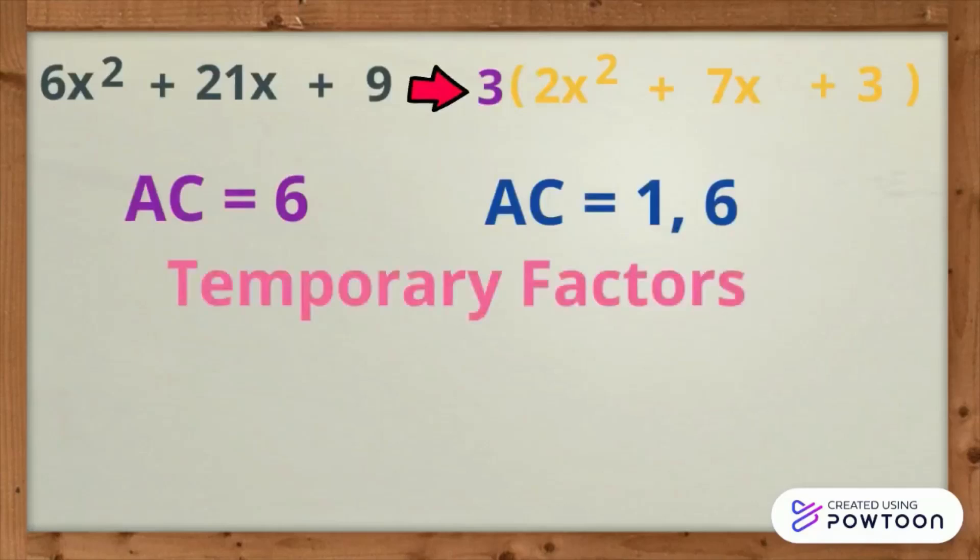Then, we are to write the temporary factors, and that's going to be quantity x plus 1 times the quantity x plus 6.